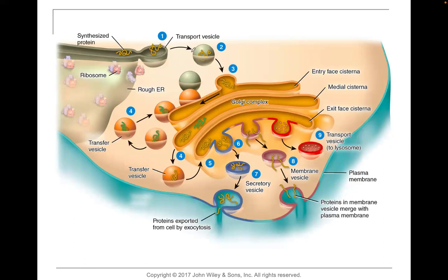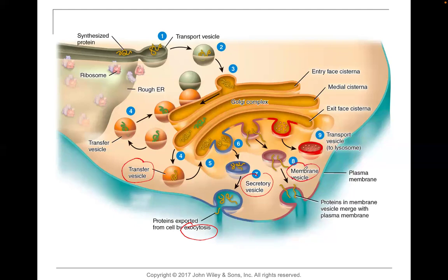As it goes into the Golgi, the body can modify it. Maybe it becomes a transfer vesicle, or it's secreted out of the cell via exocytosis — perhaps as a neurotransmitter or a digestive enzyme. Maybe it repackages the proteins to recycle the cell membrane. Or it creates a lysosome with lots of hydrogen to clear out cellular debris.